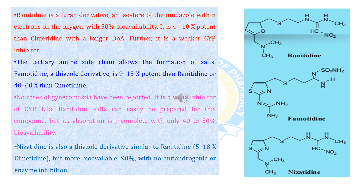Ranitidine is a furan derivative and isostere of imidazole, with the pi electrons of the oxygen, and has 50 percent bioavailability. It is 4 to 10 times more potent than cimetidine with a longer duration of action. It is a weaker cytochrome P450 inhibitor. The tertiary amine side chain allows the formation of a salt.